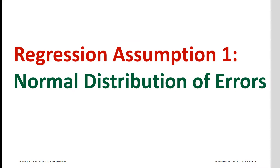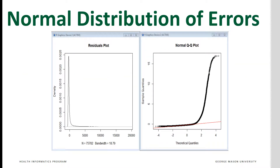A key assumption of regression is that errors have a normal distribution. This is not always correct. Ordinary regression assumes that the error term is normally distributed. This can be visually depicted in normal probability plots or normal quantile plots.